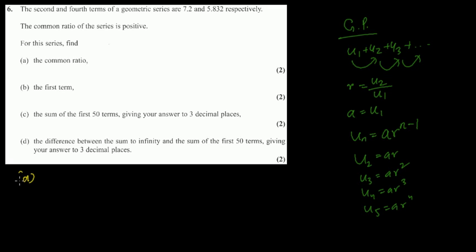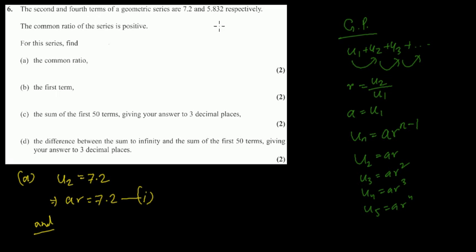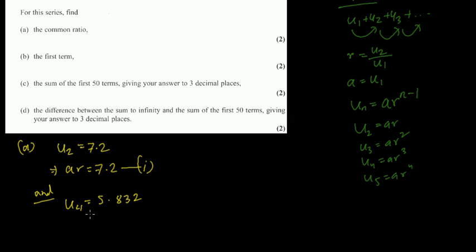The second term is 7.2, so u2 = ar = 7.2 — this is equation 1. The fourth term is 5.832, so u4 = ar cubed = 5.832 — this is equation 2. Now we need to find the common ratio by solving this simultaneous equation.